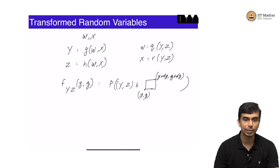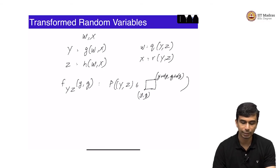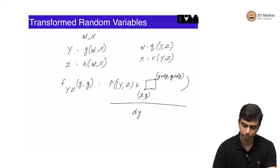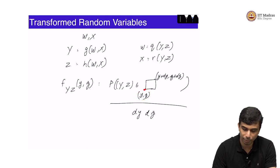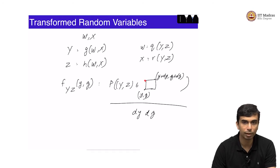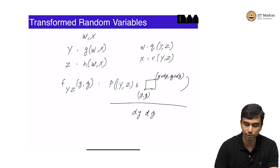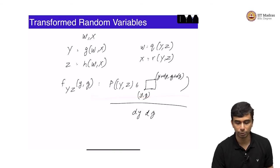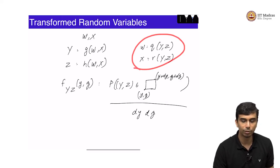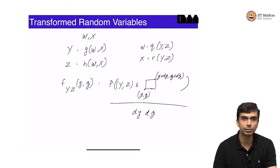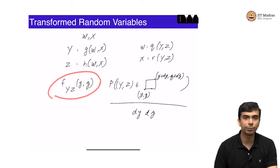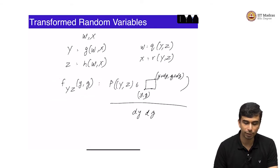f_{YZ} of y comma z is simply the probability of y comma z belonging to a particular rectangle, where one corner is y comma z and the other corner is y plus dy comma z plus dz, divided by dy dz. This is a semi-graphical, semi-symbolic derivation. The probability of y comma z belonging to this rectangle is where we can use the invertibility of the transform.